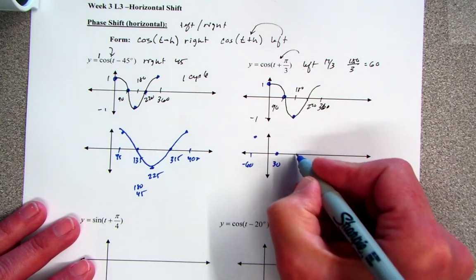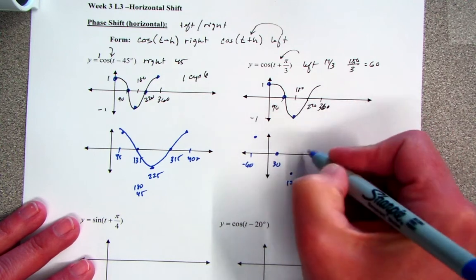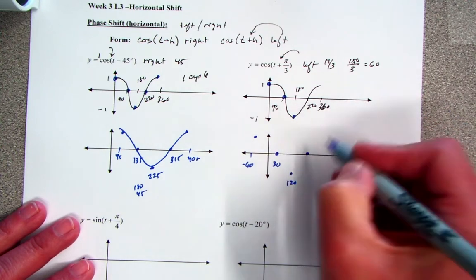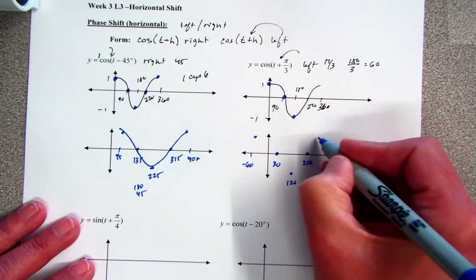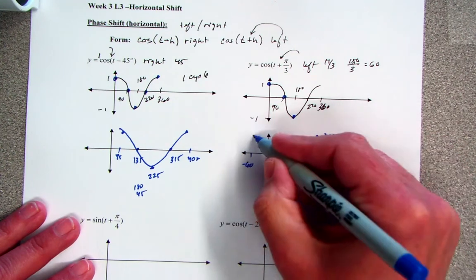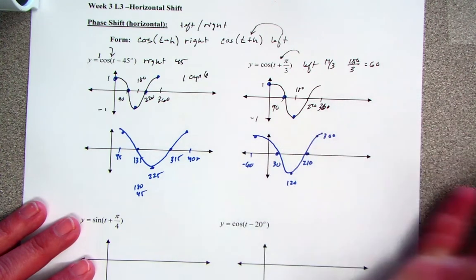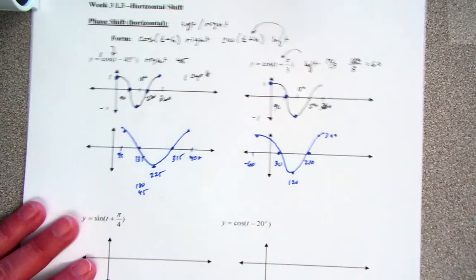Instead of being at 180, this bottom point is going to be at 120. Instead of being at 270, 60 this way is 210. Instead of being at 360, it's now going to be at 300. And notice the shape is the same. It's just slid. Unfortunately, you don't have a smart board where you could just drag it.